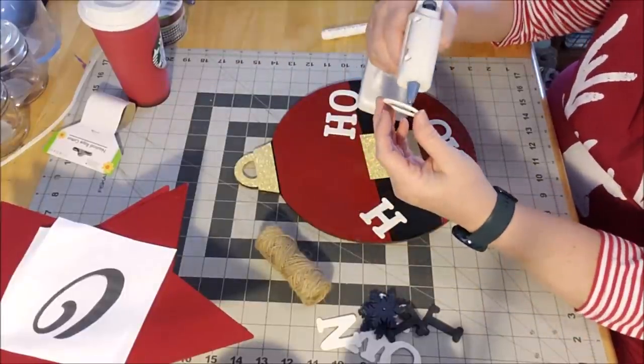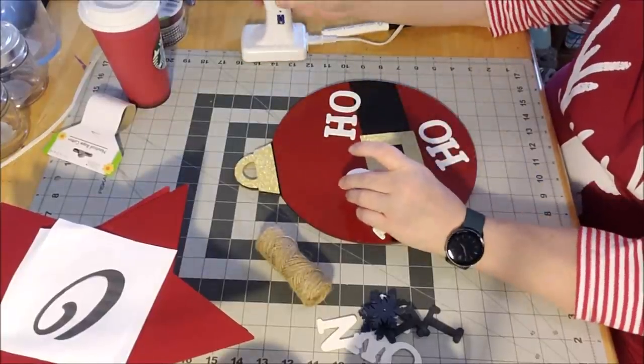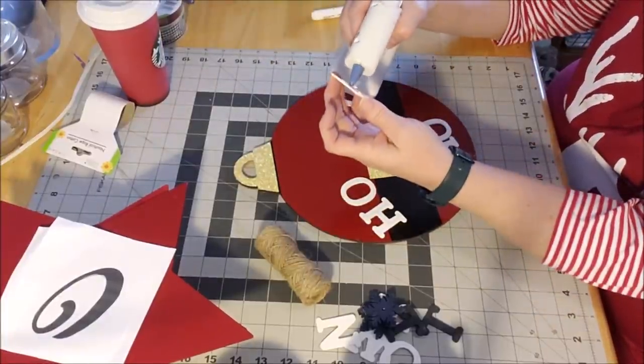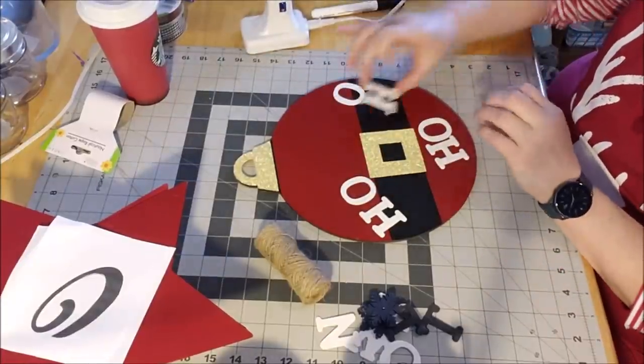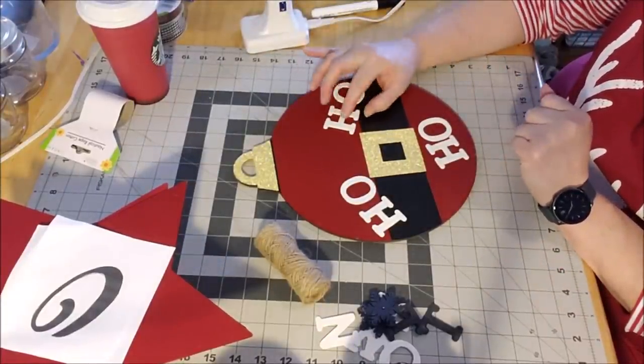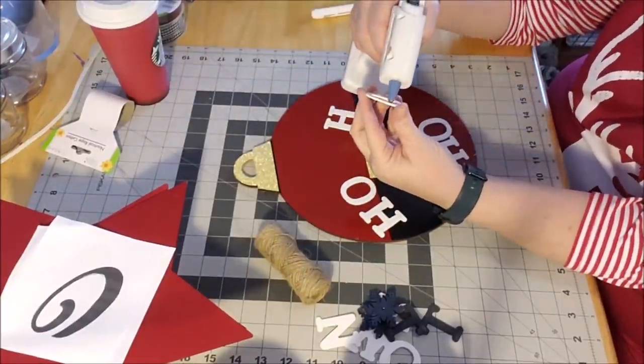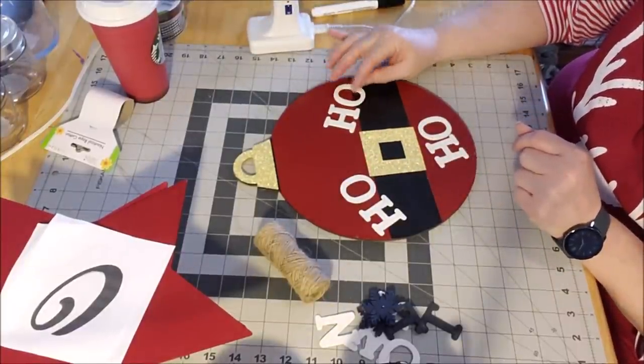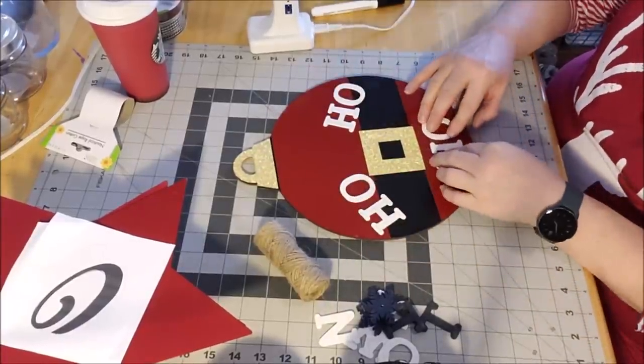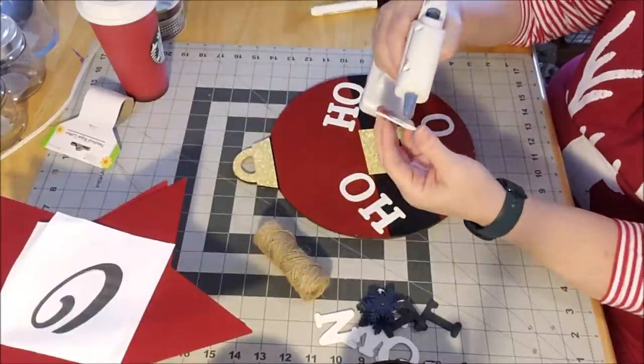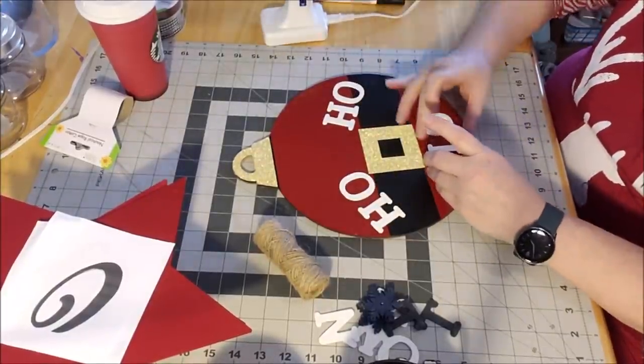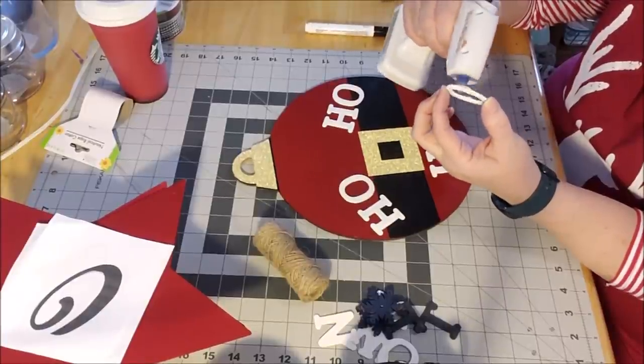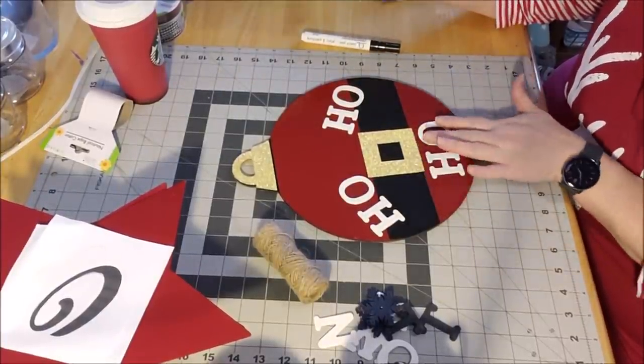But I'm just going to glue my letters down. This is like the easiest sign ever. And they're all over Pinterest, these round signs. And I thought they were like awesome. And I wanted to make one for us. I'm just hot gluing. If you don't have hot glue gun, don't worry, use regular glue, just sit it there and let it do its thing. The glue will work. This is just quicker for video purposes.